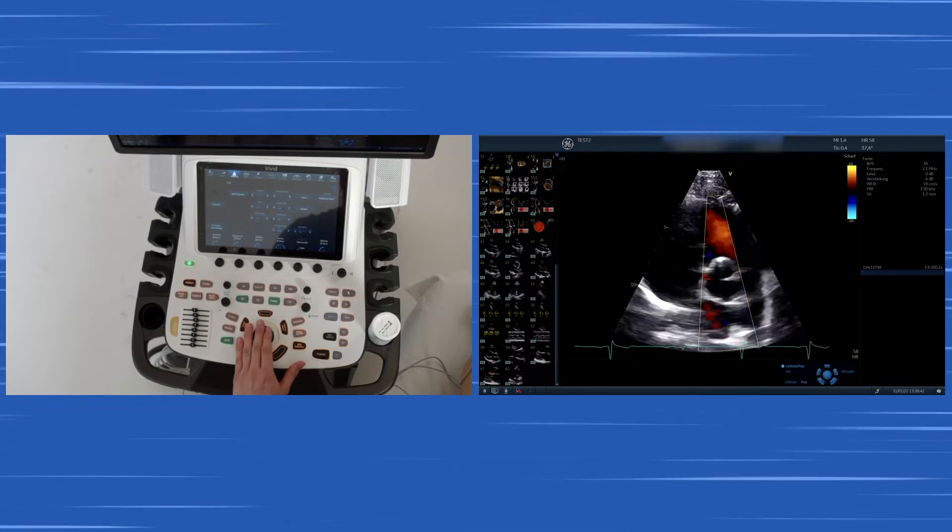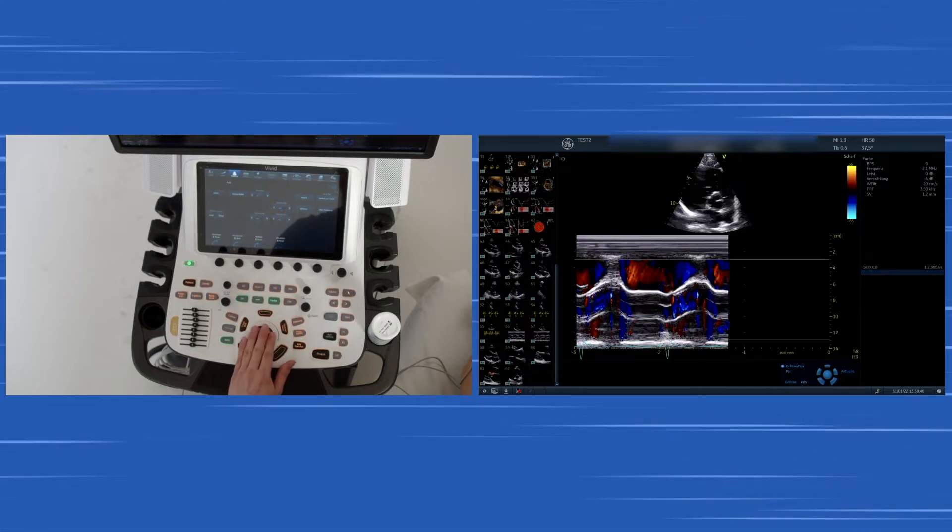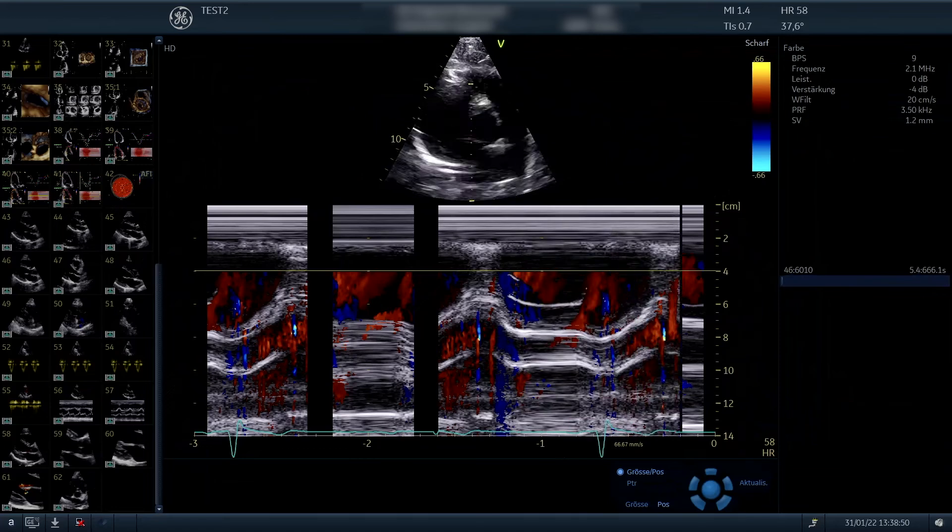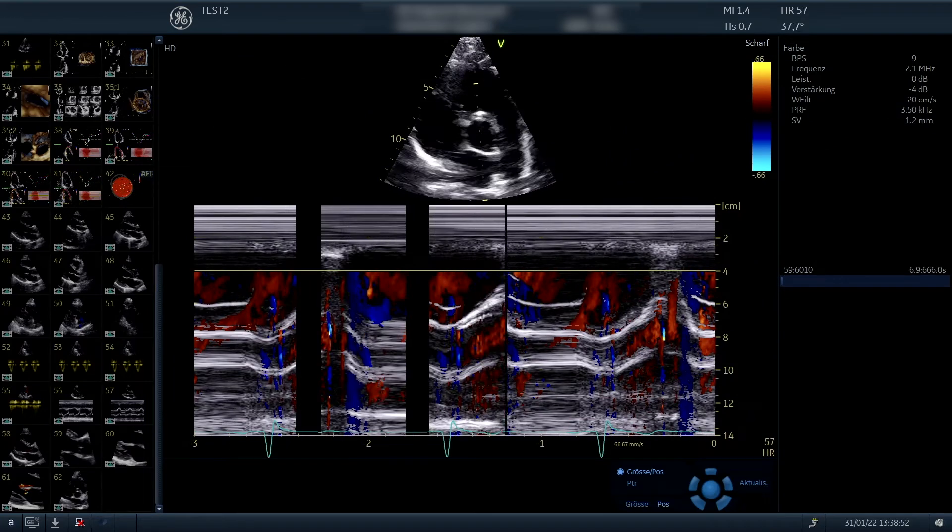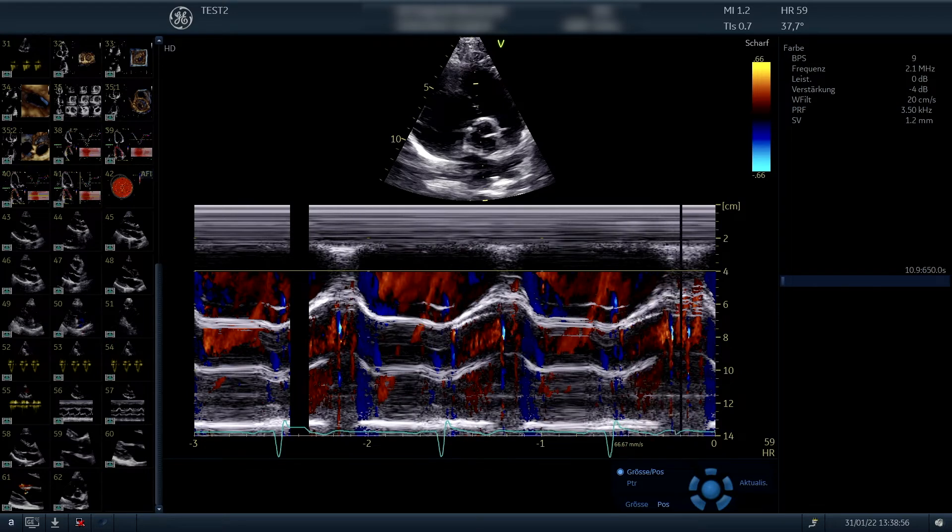You can add color Doppler to see if there's regurgitation present. Especially denote the color M modes. You could also see a regurgitation if it would be relevant in this view. Just be sure that the color M mode is located across the aortic valve.